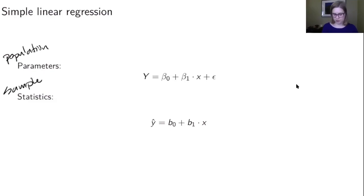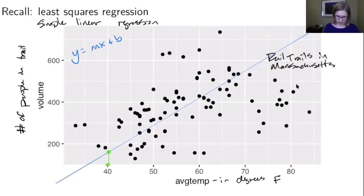The population parameters are things like β₀, which is the intercept, β₁, which is the slope, and ε, which is the residual. That's the difference between the real and the predicted value. If we went back to our picture, we could think about the residual for a particular point.